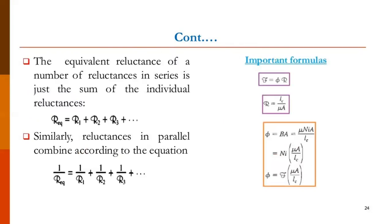The equivalent reluctance of a number of reluctances in series is the sum of the individual reluctances. Whenever reluctances are in series, the equivalent reluctance is found by simply adding: S_equivalent = S1 + S2 + S3. Similarly, reluctances in parallel can be combined according to the law of parallel resistances, just as in the electric circuit: 1/R_equivalent = 1/R1 + 1/R2 + 1/R3.